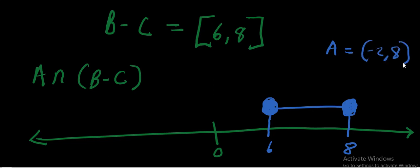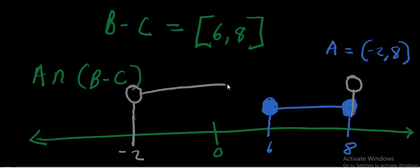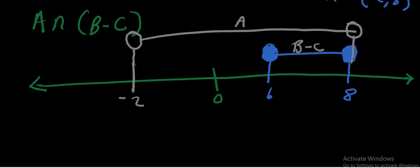Now draw set A on the same number line. Set A is open bracket negative 2 to 8, open bracket. Starting from negative 2 — unshaded circle — going to 8 — also unshaded circle — then join these two lines. This is set A. We now look for the region where set A and set B minus C are meeting, that is, their intersection.